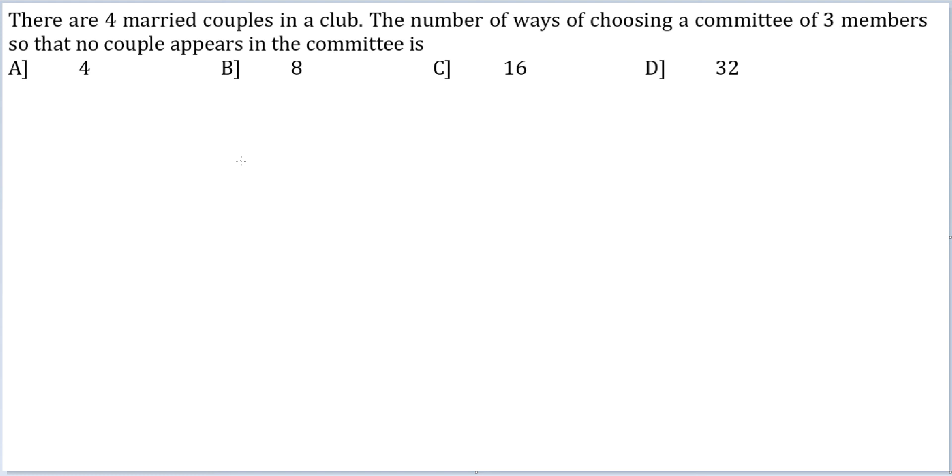Ok. The first person can be chosen in 8 ways. The next person can be chosen in 6 ways. The next person can be chosen in 4 ways. They can come in any order. Therefore you divide this entire thing by 3 factorial.